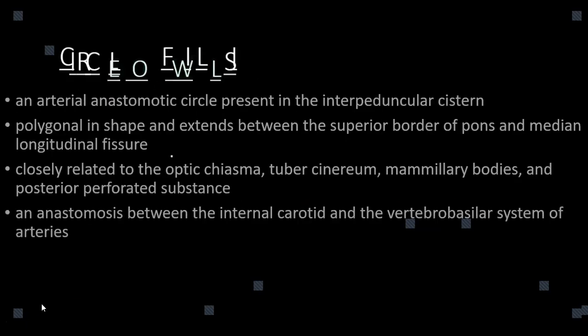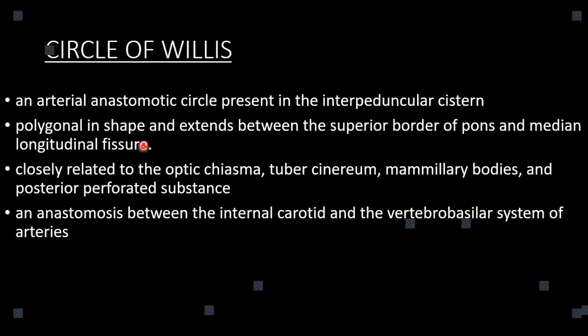We'll start with a brief introduction. Where do you find the Circle of Willis? It is present in the interpeduncular fossa. In fact, it is not circular in shape — rather it is polygonal in shape. That is why the French refer to the Circle of Willis in a more correct term: they call it the 'polygone de Willis,' because it is polygonal, not circular in shape.